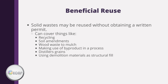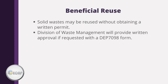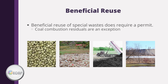As long as a potential solid waste can be used for something, it is not considered waste and can be reused without obtaining a written permit. Beneficial reuse can cover things such as recycling, soil amendments, wood waste to mulch, making use of byproduct in process, distillers grains, and using demolition materials as structural fill. However, there must be a legitimate use — for example, if you use demolition materials as fill, you must be planning to construct on the area where the material is buried; you cannot just bury it and move on. The Division of Waste Management will provide written approval if requested using a DEP 7098 form. Beneficial reuse of special waste does not usually require a permit, though there is an exception for coal combustion residuals.